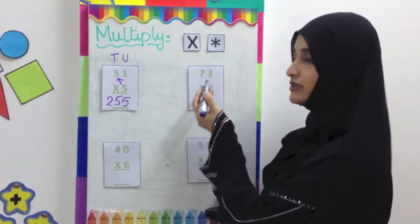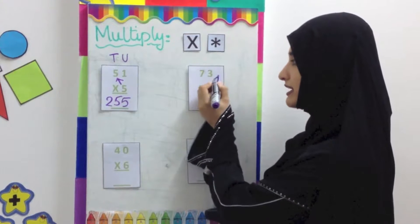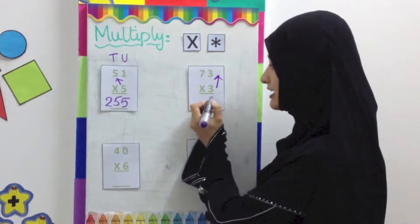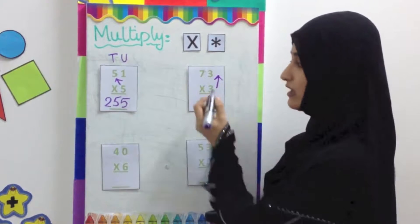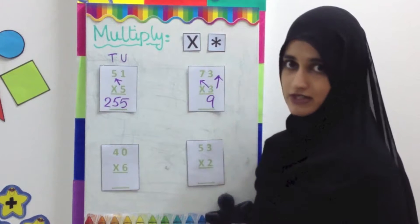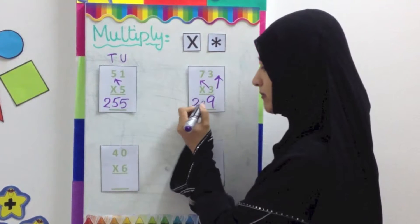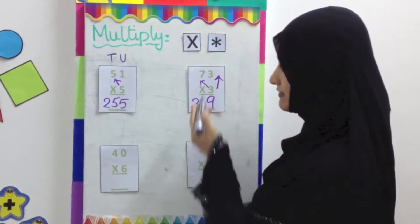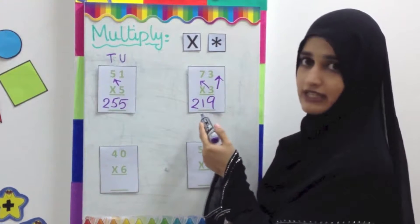73 multiplied by 3. We are going to first multiply 3 with the 3. 3 threes are 9 — write that in the units place. Now we are going to multiply 3 with 7. 3 sevens are 21. The answer comes down here. 73 multiplied by 3 equals 219.